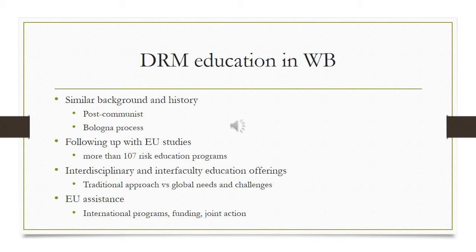Now let's talk about disaster risk management education in the Western Balkans. The Western Balkan countries share a communist past which, to various extents, continues to affect their higher education systems. However, in the post-communist era, higher education curricula have been heavily revised to incorporate the principles set forth in the Bologna process. Also, entirely new courses have been introduced. The European Union has supported the higher education sector in the region through a broad range of projects and financing schemes, and most countries have reciprocated by willing to embrace Western education practices, such as multidisciplinary or interdisciplinary approaches.